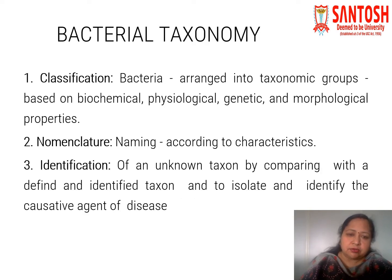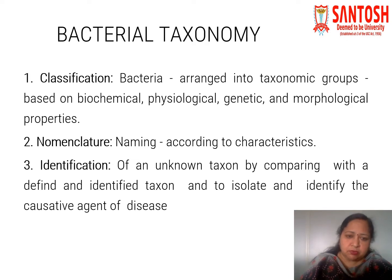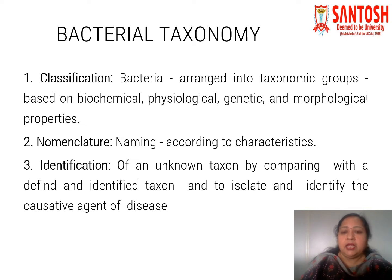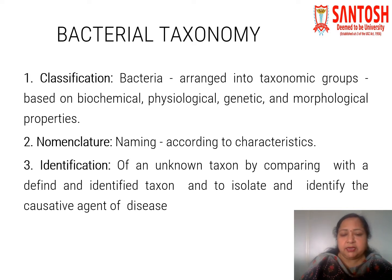Now, bacterial taxonomy or classification. Bacteria are arranged into taxonomic groups based on their biochemical properties, physiological properties, genetic composition, and morphological properties. On these properties, various classification systems are proposed to classify bacteria, and the nomenclature — that is, naming — of bacteria is usually based on their characteristics, like gram-positive cocci in clusters being named Staphylococcus. Identification of an unknown taxon is done by comparing with defined and identified taxa to isolate and identify the causative agent of disease.